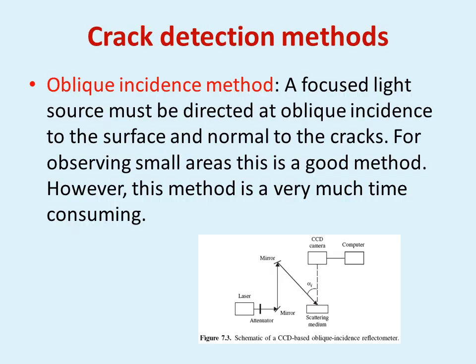Crack detection: once the load has been applied onto the specimen which is coated with brittle coating, you will get the cracks and these cracks need to be detected. First method is oblique incidence method. A focused light must be directed at an oblique incidence to the surface and normal to the cracks for observing small areas. This is a very good method, however, it is very much time consuming.